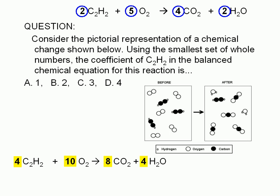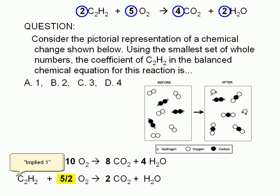Or we can divide all the coefficients by 2. We will have a balanced equation with a coefficient set of 1, 5 halves, 2, and 1.